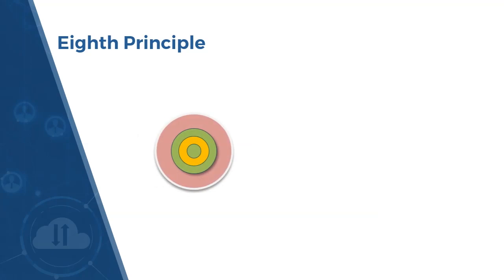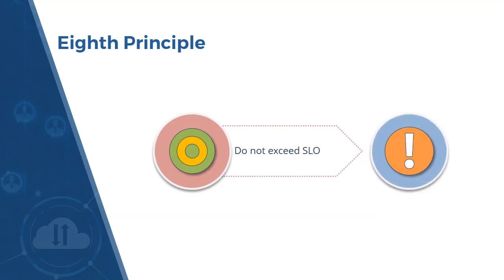Toward that end, the eighth principle is to ensure that you don't exceed the service-level objective, which means you should favor stability and reliability over constant growth and change. Clearly, new features should be introduced to keep your system up-to-date, but this should not be the focus — piling in new features into a system that cannot handle them will only cause more problems. The service-level objective should be treated similar to a budget: new features can be added when new resources become available, such as through upgraded hardware, but doing so prematurely will almost certainly backfire.